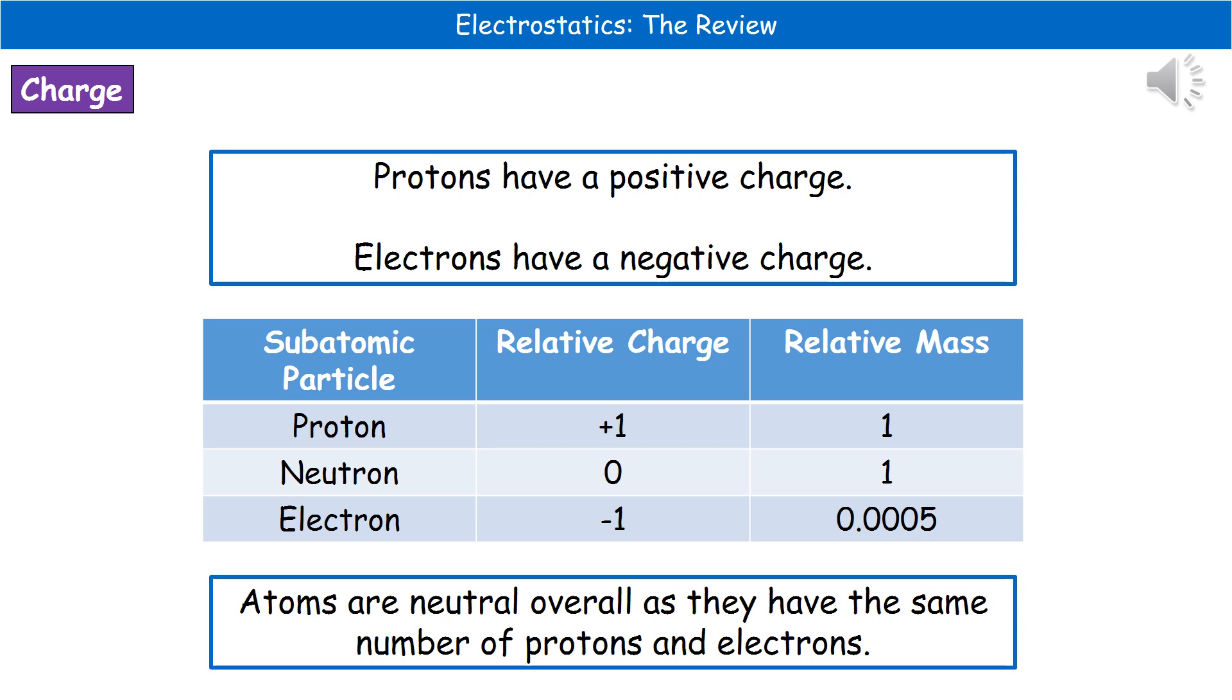In an atom, these are actually neutral overall, and the reason for that is they've got the same number of protons as electrons. Therefore, they've got the same number of positive charges as negative charges, so they just cancel out and make it neutral.